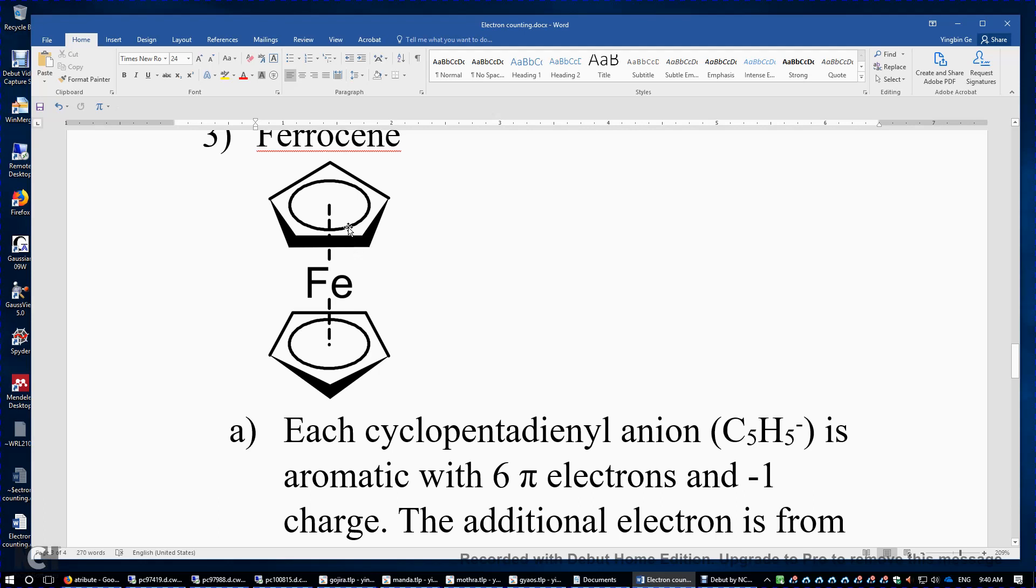So this p-orbital and the two double bonds form conjugation with 6 pi electrons in total. And each cyclopentadienyl anion has a negative 1 charge. Where does this negative 1 charge come from?